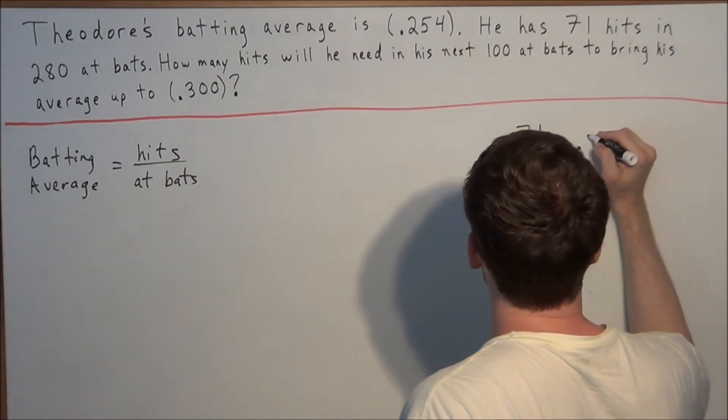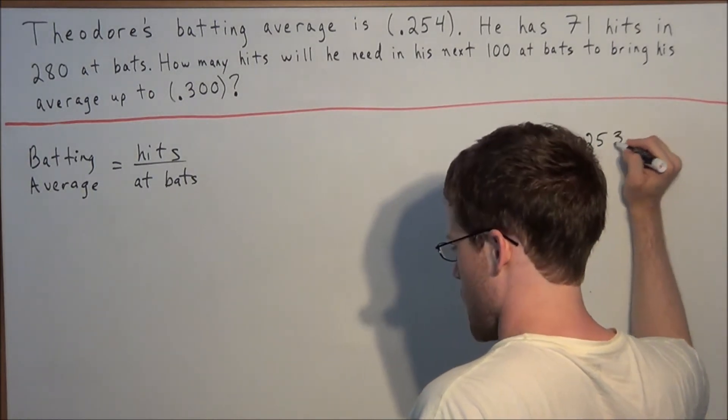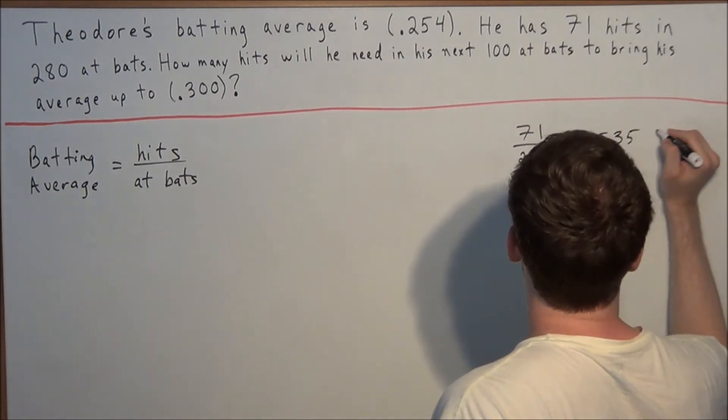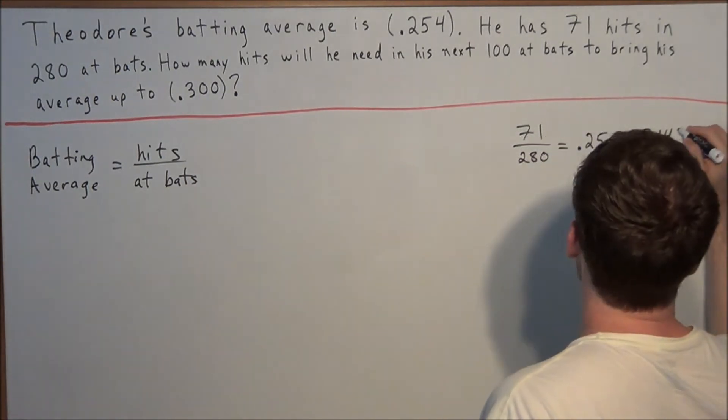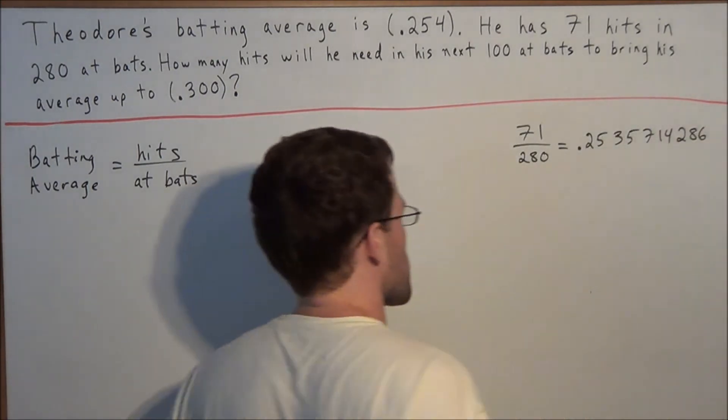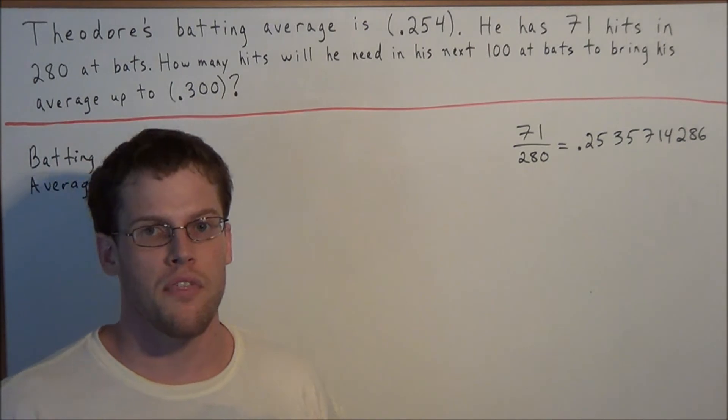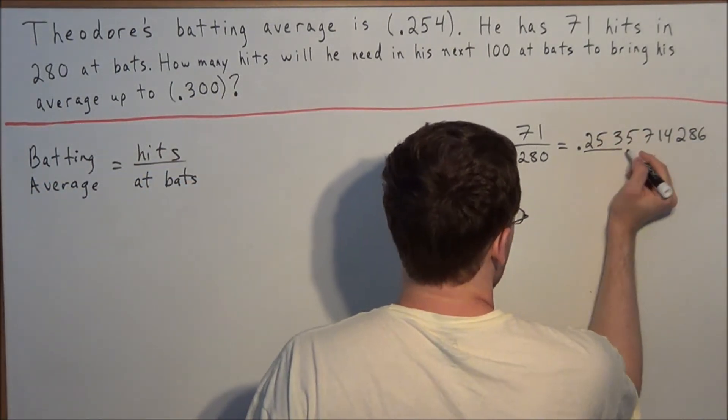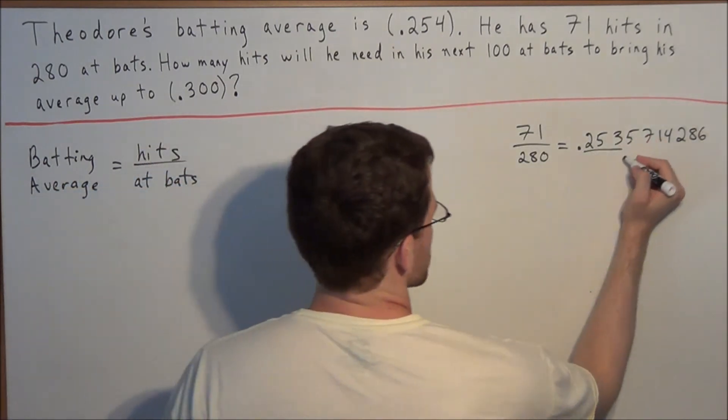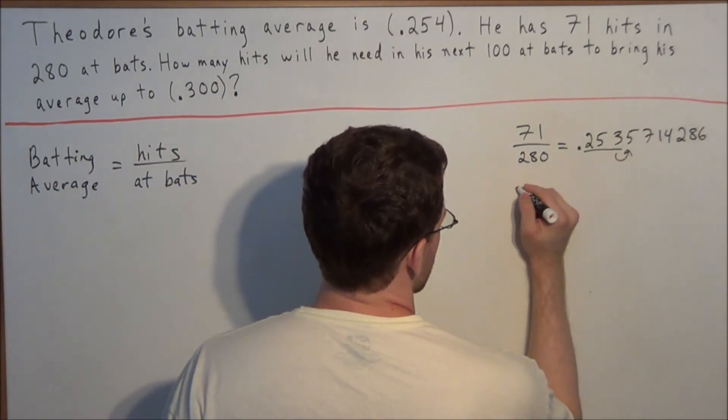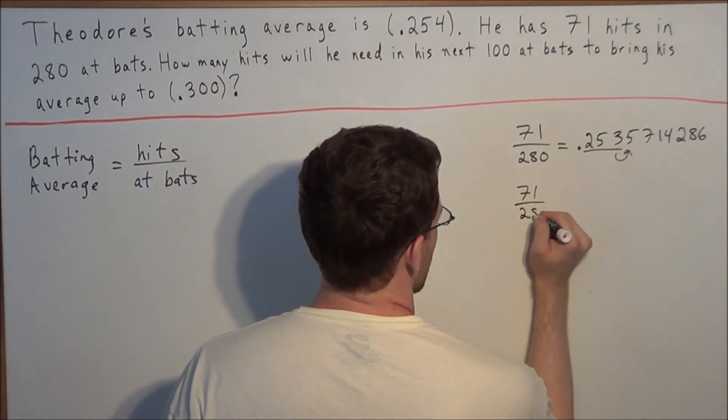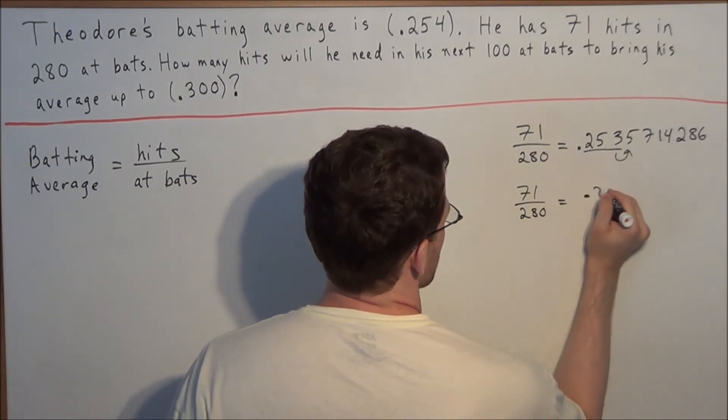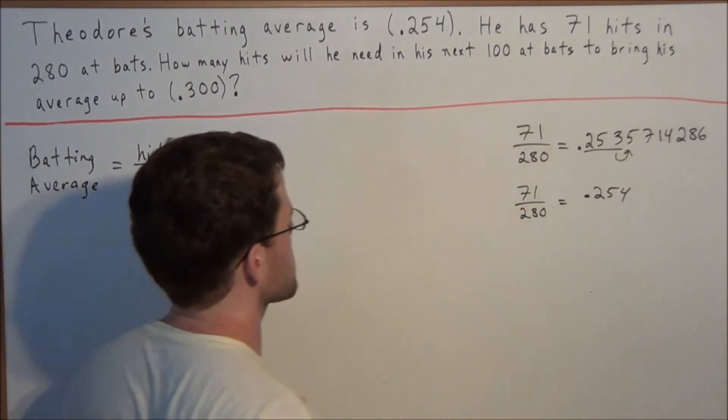And we get .253 and then we have 5714, and three more, we got 286. So with the batting average, we always look up to the thousandths place, that's how they decided to do it when baseball was created. So we look one digit to the right, and we would round this to the nearest thousandth. It would round to .254, which is his exact batting average.